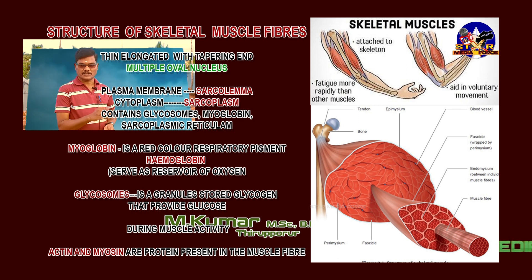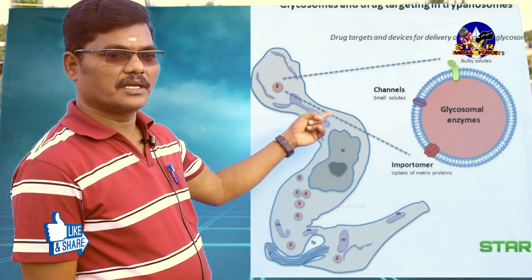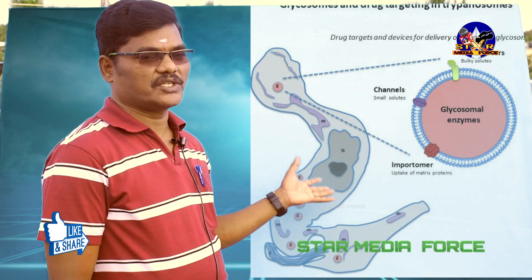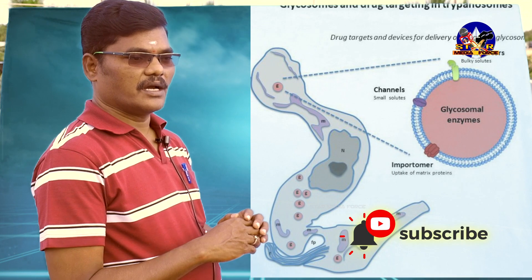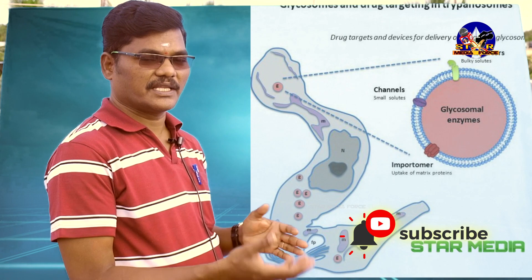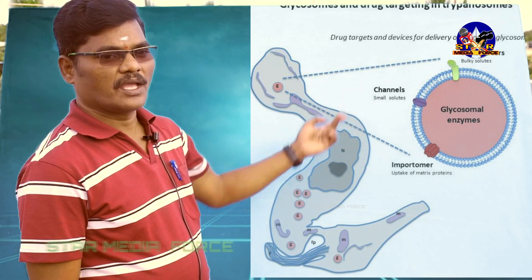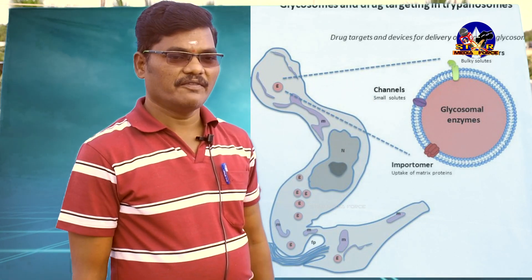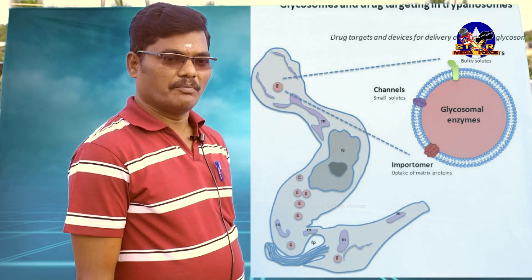Glycosomes are granules present in the muscle fiber and serve as storage of glucose. Whenever we work, the muscle uses glycosomes to provide energy. Also, two very important proteins are present inside the muscle fiber.